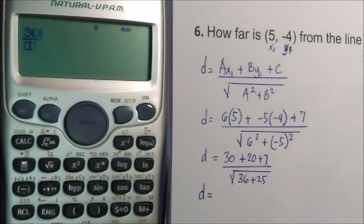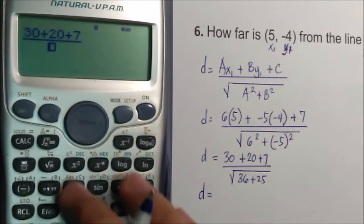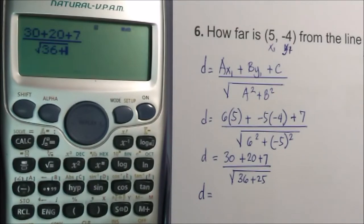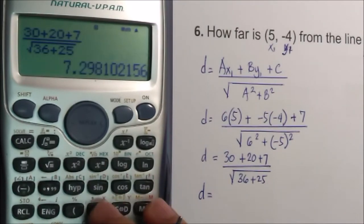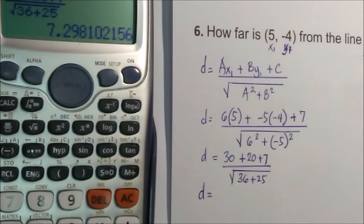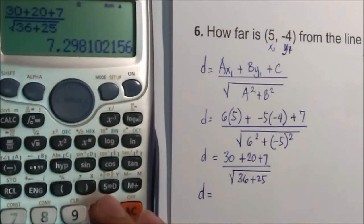We have 30 plus 20 plus 7, square root of 36 plus 25. The answer is 7.3.